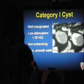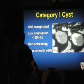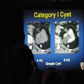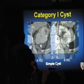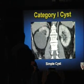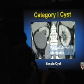Here's a category 1 lesion — well marginated, low attenuation, non-enhancing, thin smooth walls. Note that you can have a thin smooth wall; it doesn't have to be imperceptible. Here's another category 1 cyst on a multiplanar CTU — there's a little beak sign from the old IVU days, which is acceptable for a category 1 lesion.